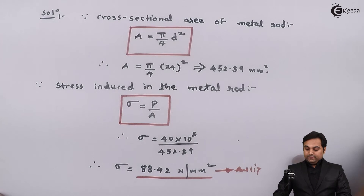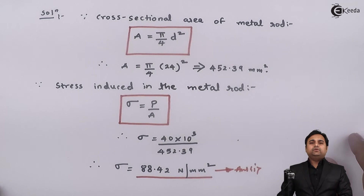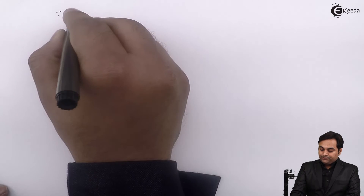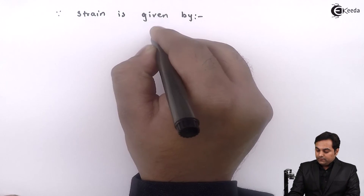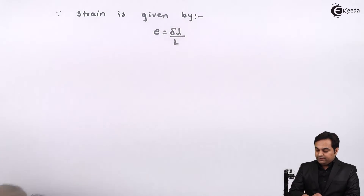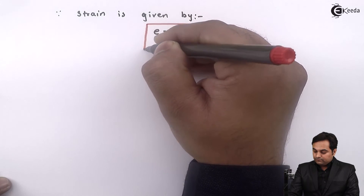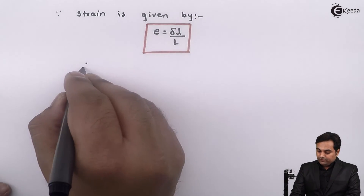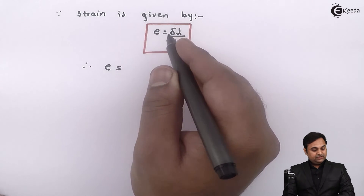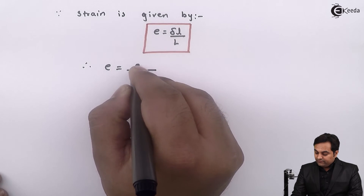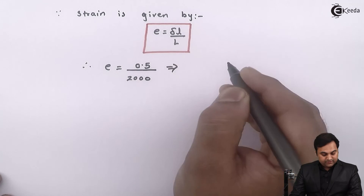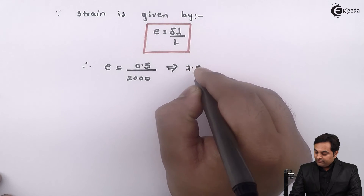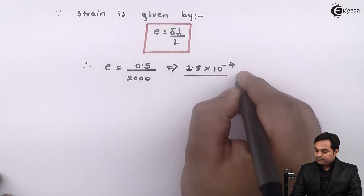This gives the first answer: sigma is 88.42 Newton per mm squared. Next, to calculate Young's modulus, we first find strain. Strain is change in length upon original length. Therefore strain equals 0.5 divided by 2000, which comes out to be 2.5 into 10 raised to minus 4, and strain has no unit.